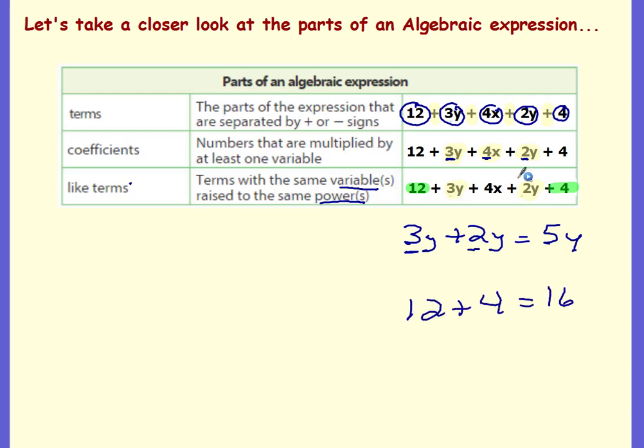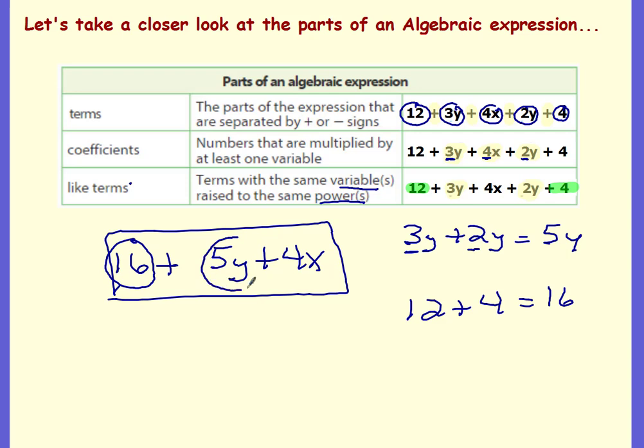So you could actually simplify this expression by combining your like terms. If I combine my constants, I'm going to get 16, plus combine my y terms, the 3 y's and the 2 y's - 5y - and then there's nothing to combine with the 4x, so it stays a 4x. So we simplified this expression. We went from 1, 2, 3, 4, 5 terms to how many terms? To the 16, the 5y, and the 4x - to 3 terms.